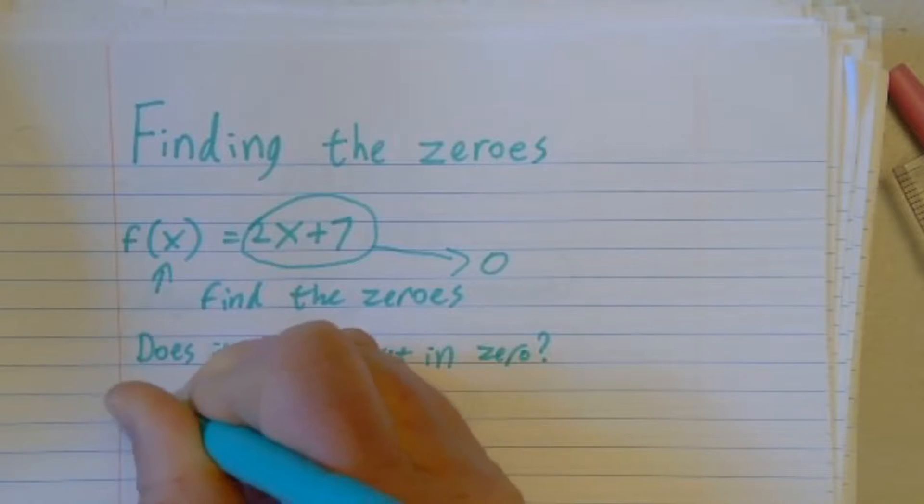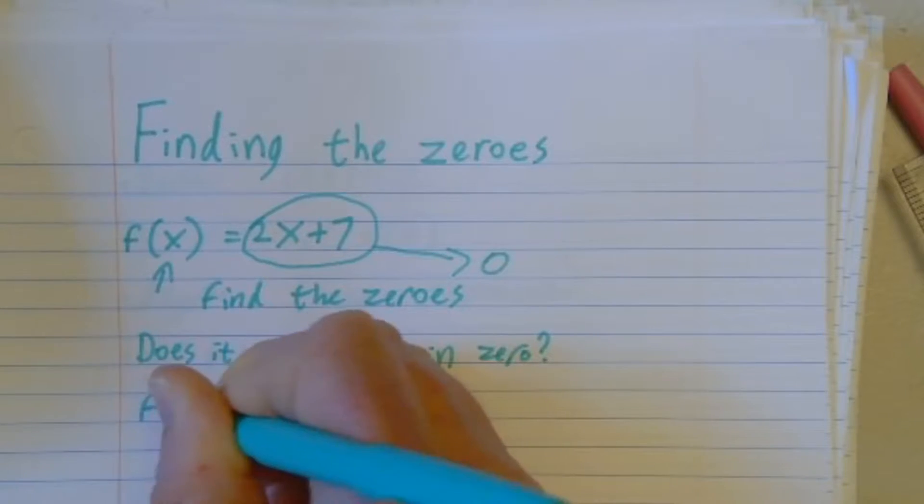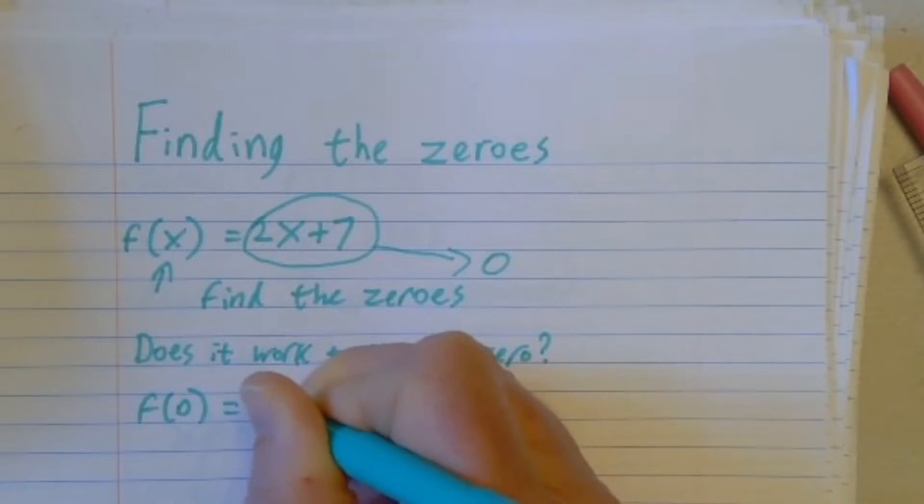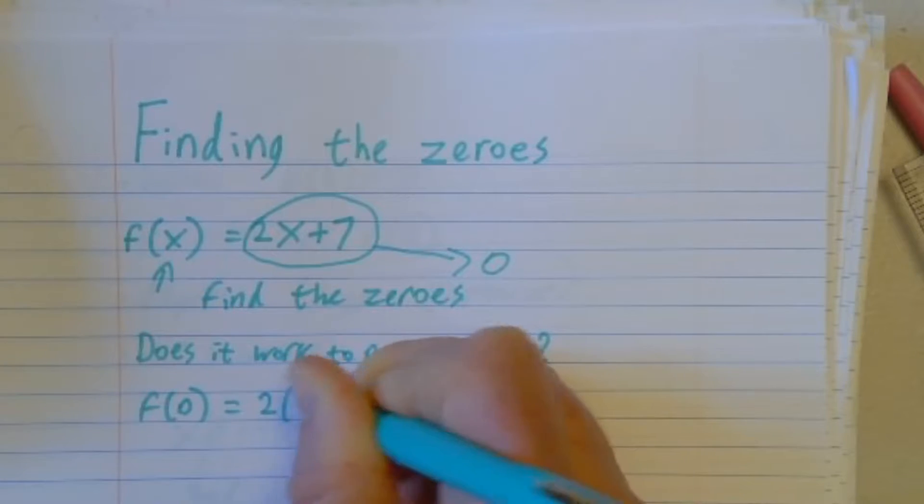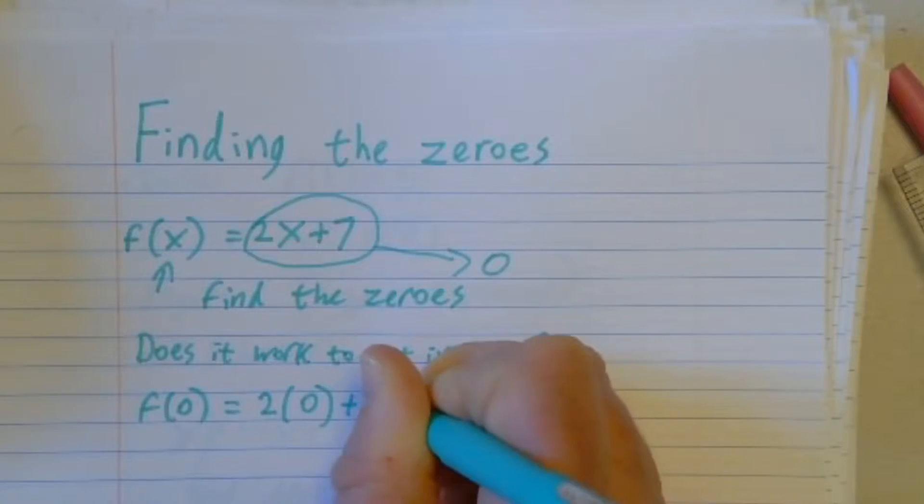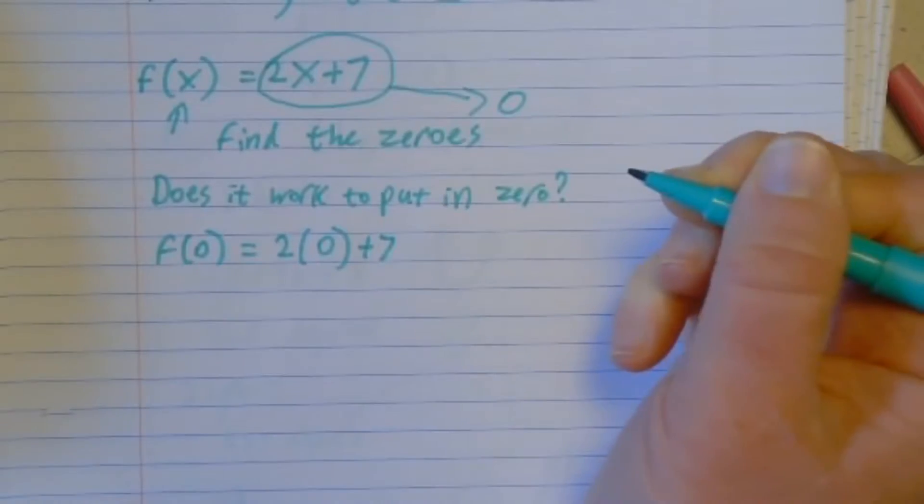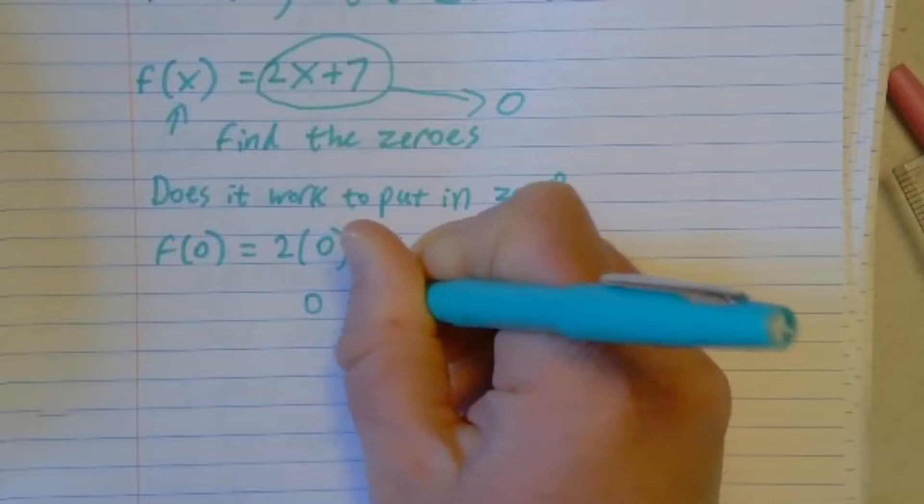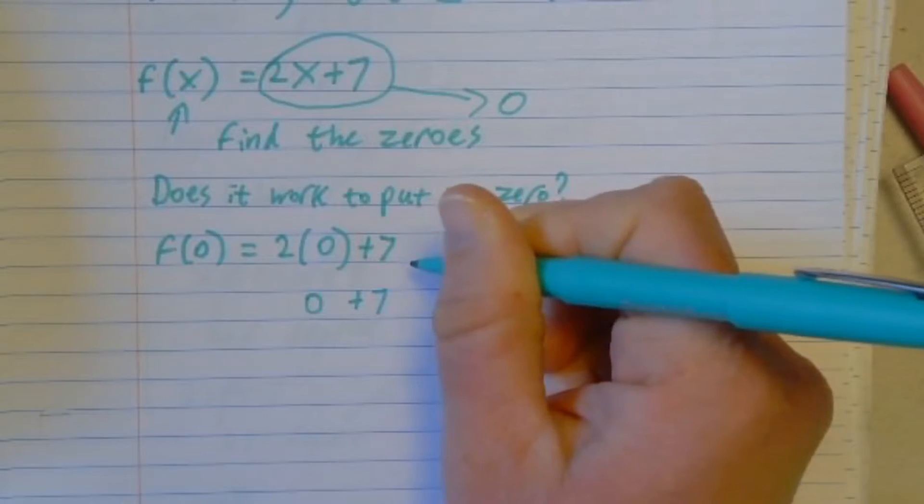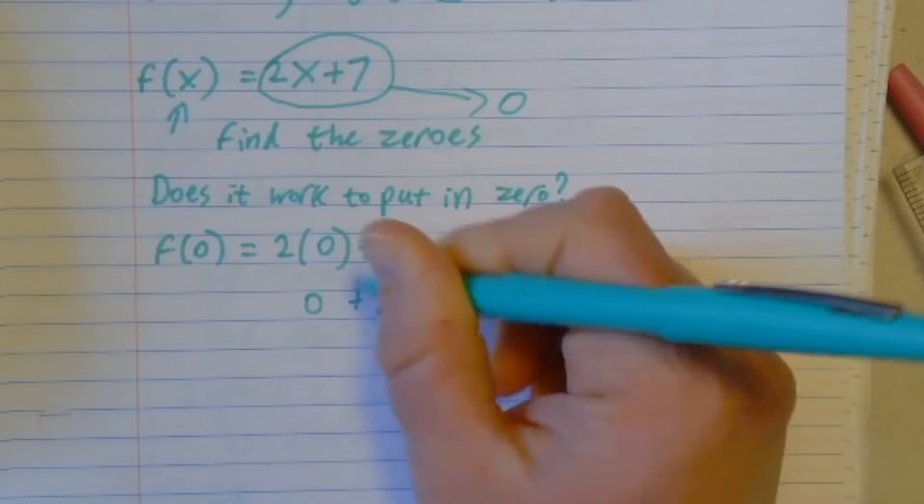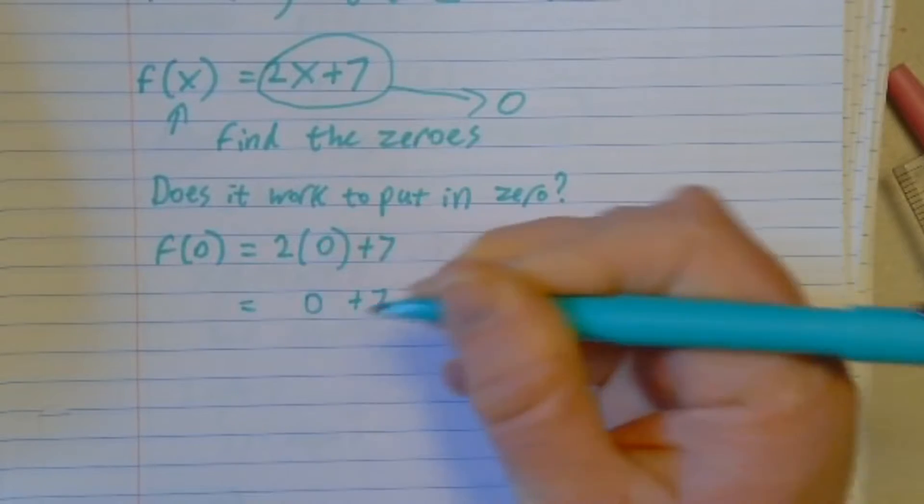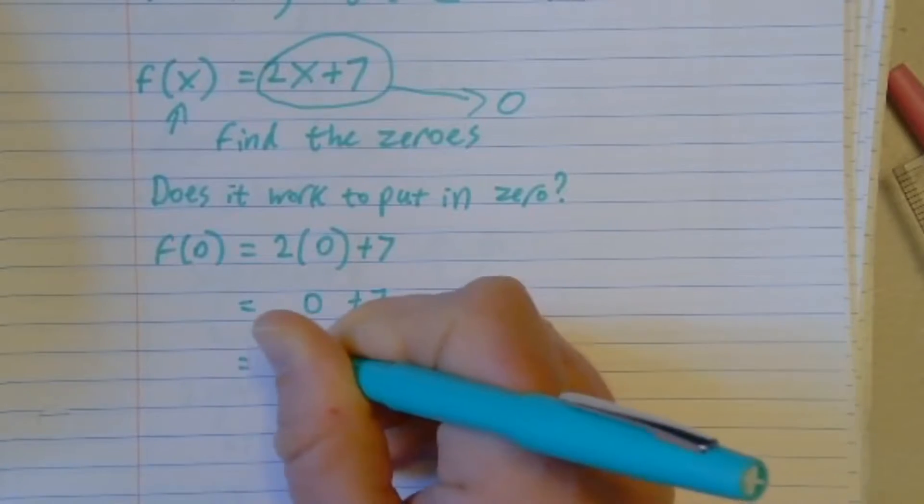Well, let's see. f of zero means I need to put in a zero wherever I see an x. 2 times zero is zero. But then I have to add 7 to it because I didn't zero out the 7 because it's being added rather than multiplied. Zero plus 7 is 7.